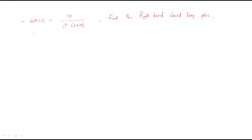Hello everyone. In this session, another problem regarding the Nyquist plot. The given open-loop transfer function equals 10 divided by s-cubed times (s plus 10). The question is: find the right-hand closed-loop poles.